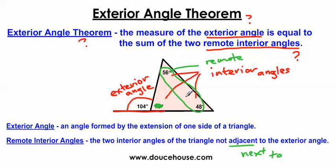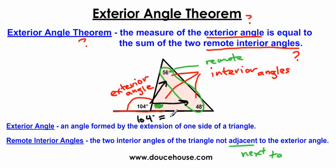If you have a hard time with this concept, remote means far away — like if you have a remote control car, you don't need to be literally right next to the car to control it; you can be far away from it. So the measure of the exterior angle is equal to the sum of the two remote interior angles. Sum means to add together, so if I were to add the two remote interior angles, they would combine to equal the exterior angle. Since we have 104 degrees as the exterior angle, if I take 56 plus 48, I also get 104 degrees. This is always going to happen whenever you have an exterior angle on a triangle.